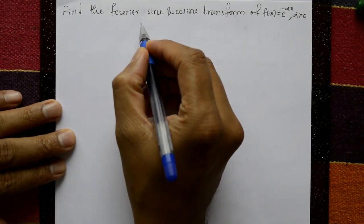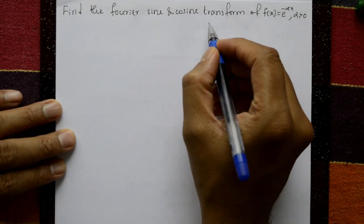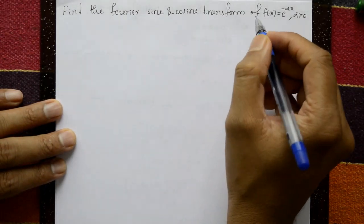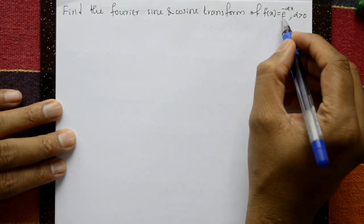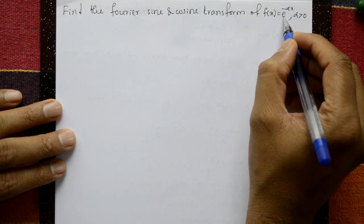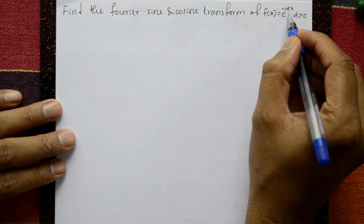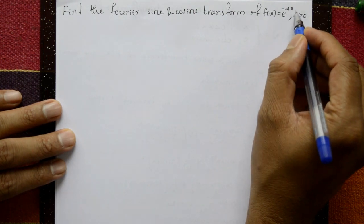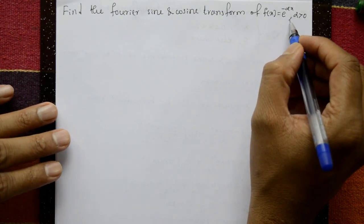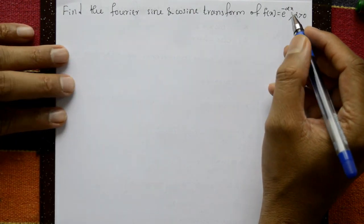Find the Fourier sine and cosine transform of f(x) = e to the power minus alpha x, where alpha is greater than 0.